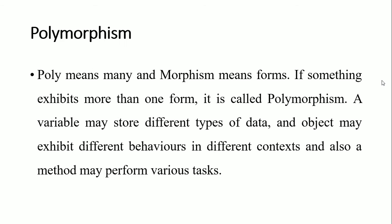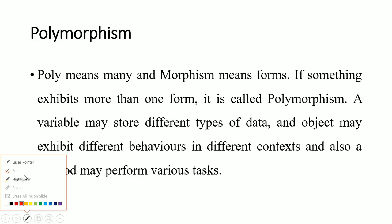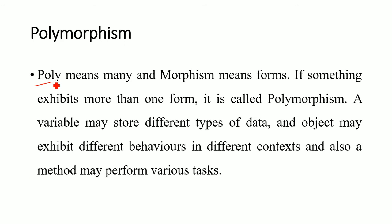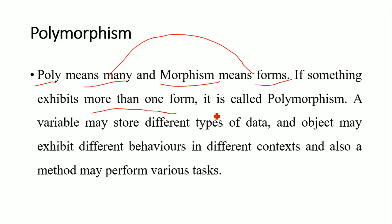Polymorphism is a word coming from a Greek word — two words: one is 'poly' and another one is 'morphism'. Poly means many, and morphism means forms. So, polymorphism means many forms. If something exhibits more than one form, it is called polymorphism.